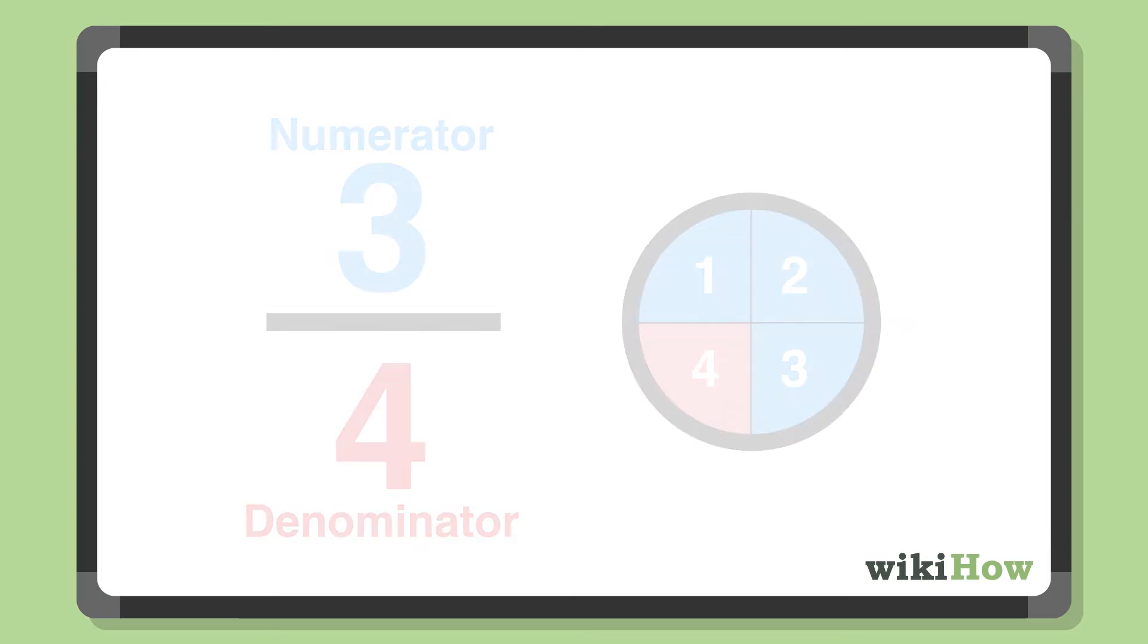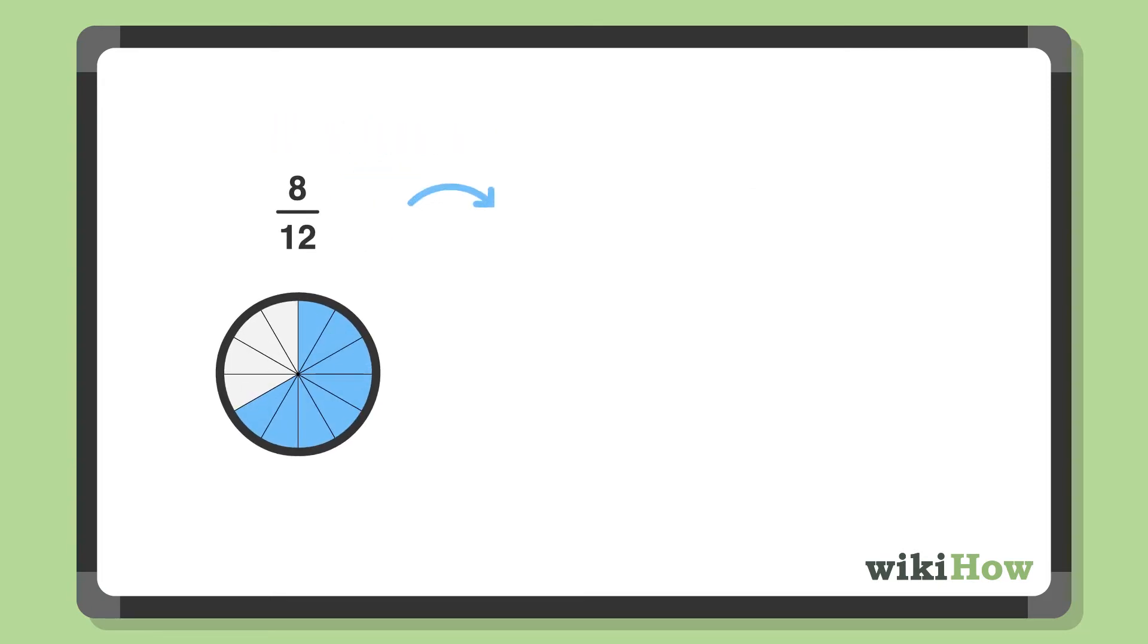Some fractions can be simplified, which means that you can divide the numerator and denominator by a common factor to create an equivalent fraction.